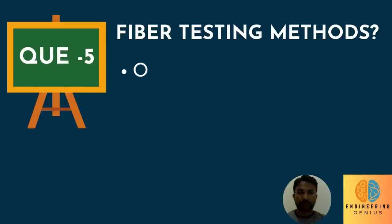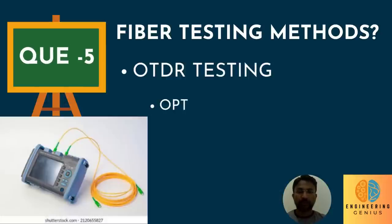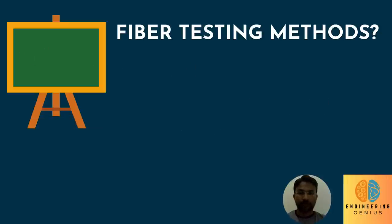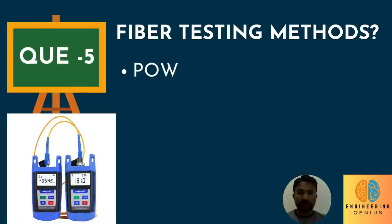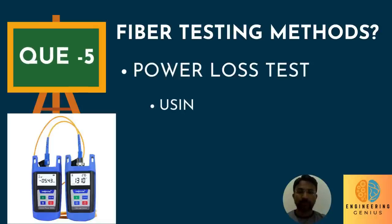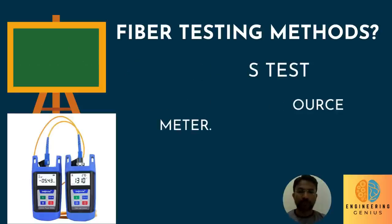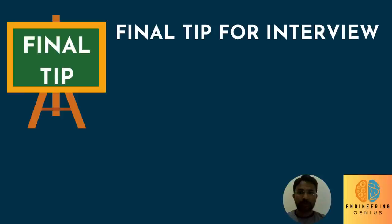Question 5: What are the methods for testing fiber optics cable? One is the OTDR test, which stands for Optical Time Domain Reflectometer — we can troubleshoot and find faults in a fiber line using the OTDR test. Another important test to measure losses in a fiber optics network is the power loss test, performed using a power source and meter. The source meter transmits the power and the power meter measures the received signal.